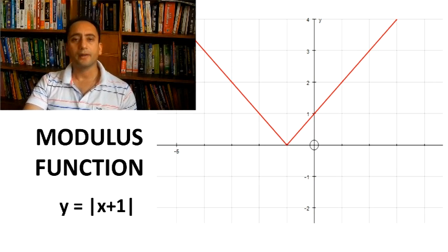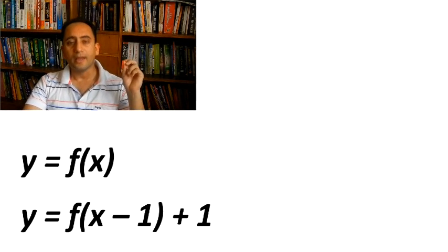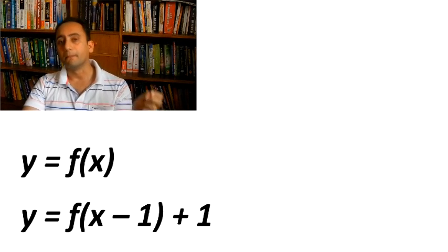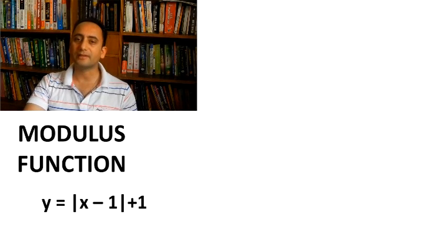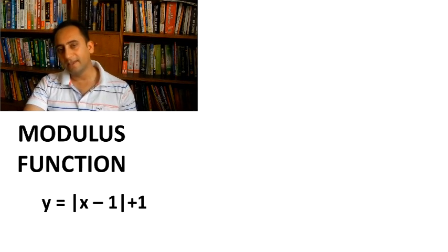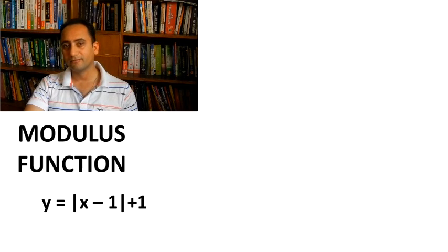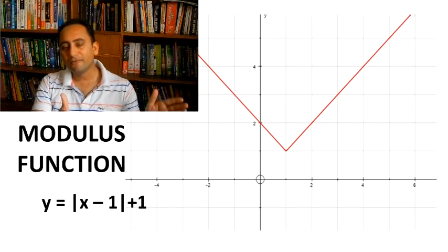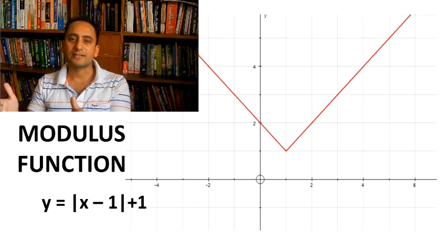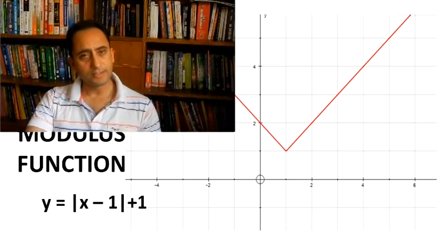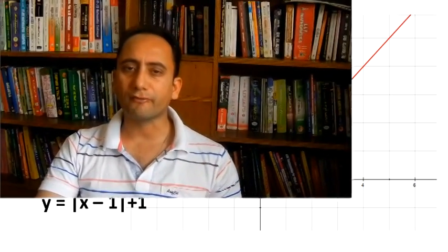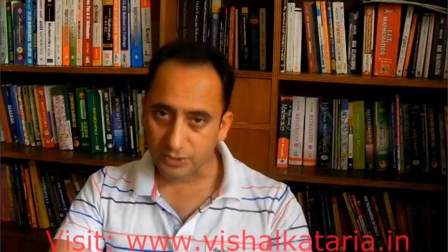Now let us consider the case where y = f(x) becomes y = f(x - 1) - 1. Taking the same modulus example, y = |x| becomes y = |x - 1| + 1. The graph will first shift 1 unit horizontally to the right and 1 unit vertically upwards, and the vertex will be at (1, 1). This was a brief recapitulation of different kinds of equations, their graphical representations, and a few transformations.